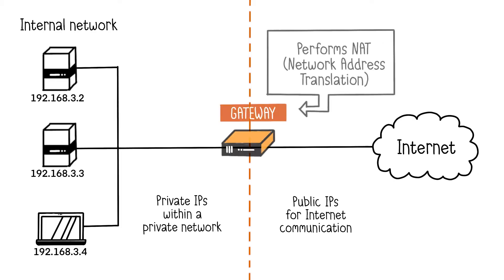This is where NAT, or Network Address Translation, comes into play. It enables internal machines with private addresses to communicate over the Internet while appearing to use public addresses. It's crucial to note that NAT is necessary due to the insufficient number of IPv4 addresses for all Internet-connected devices. To conserve unique IPv4 addresses, we employ a strategy by using private addresses for internal communications and public addresses only when communicating with the Internet.